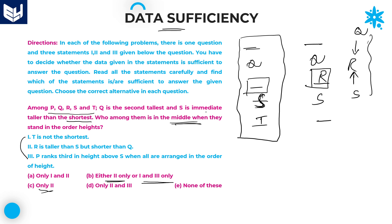So T is at the bottom. Statement 3 says P ranks third in height above S. That means P is at the middle position. If P is at the middle position, then automatically Q and one more person, R, fill the remaining slots, and the middle person is obviously R. Therefore, you will get the answer by using statements 1 and 3 only, as well as by using only statement 2.